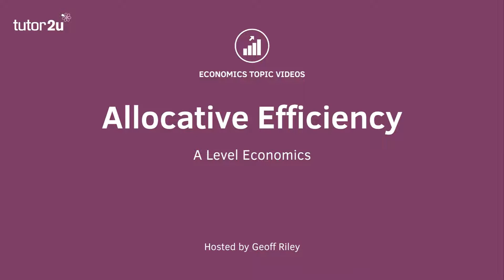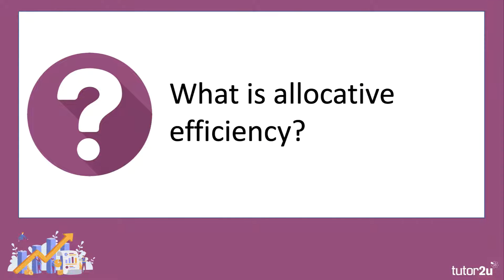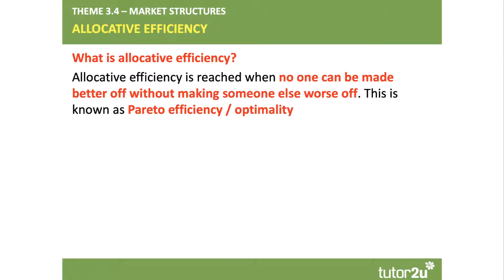Welcome to the second in our series of videos looking at aspects of economic efficiency. This time we're going to take a focus on allocative efficiency. Allocative efficiency is basically trying to reach a socially optimal allocation of scarce resources.